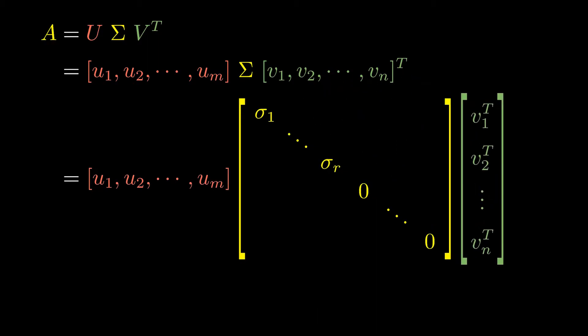If we partition U and V by columns, then it ends up like this, where sigma-r is the last non-zero singular value, and so r is the rank of A. Writing this out gives us an expansion of A in terms of its singular vectors, with singular values as the coefficients.